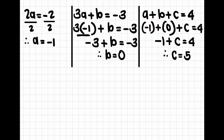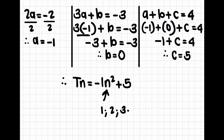Then I take a equals negative 1, plus b equals 0, plus c equals 4. So minus 1 plus 0 is minus 1 plus c equals 4. Therefore c equals 4 plus 1, which is 5. So I have a equals negative 1, b equals 0, and c equals 5. The nth term is tn equals minus n squared plus 5. Remember, you can determine any term value by replacing n with the term number you want — for example, replacing n with 100 to find term 100.